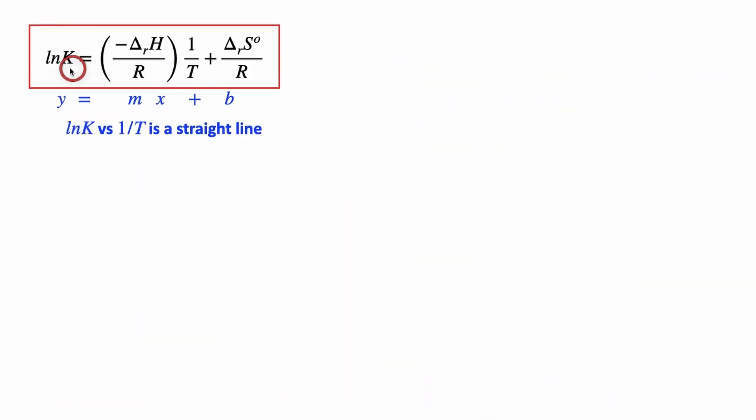So what this looks like, this is our straight line equation right here. ln K versus 1 over T is a straight line. If we have a graph of ln K versus 1 over T, that will give us a straight line, assuming it behaves the Van't Hoff equation with a slope of negative delta H over R. So if you know the slope, you can calculate delta H this way.